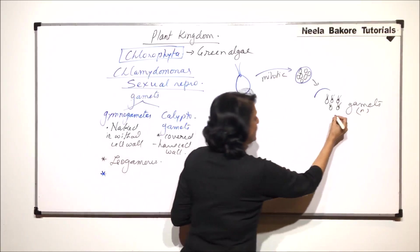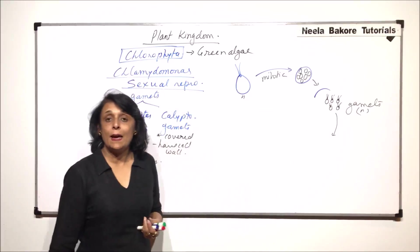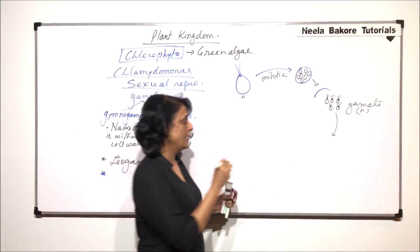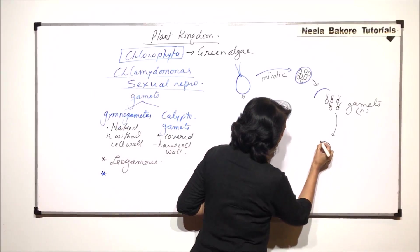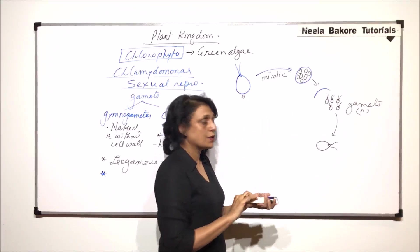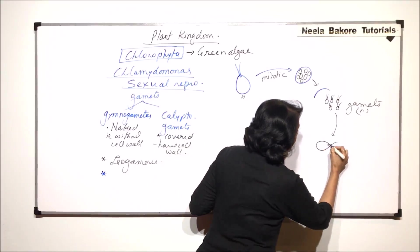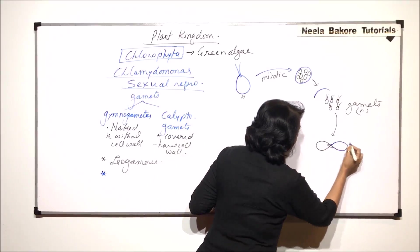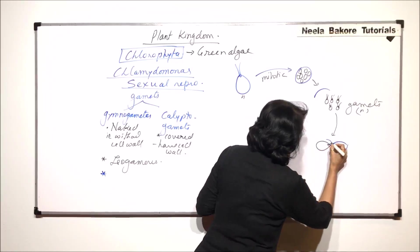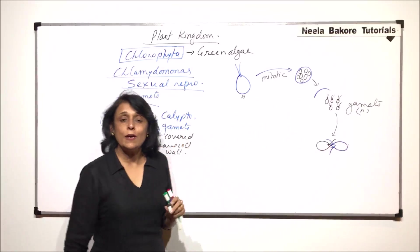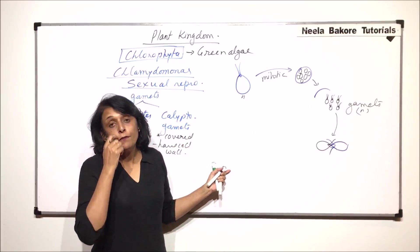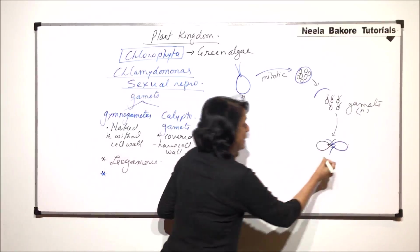Now, two gametes are going to fuse. When these gametes fuse, they fuse from their anterior end. If we draw one gamete which has its two flagella and it fuses with the other gamete, this is the other gamete and it has its two flagella. There are two gametes, each one is a biflagellate gamete and they fuse through their anterior end.